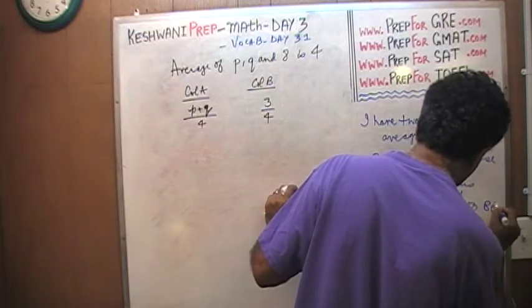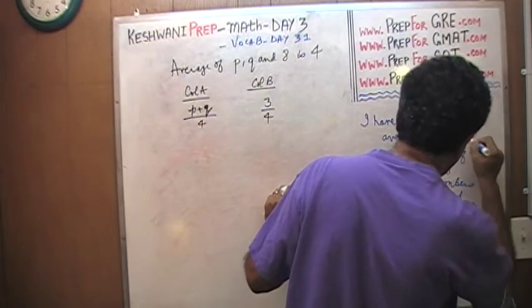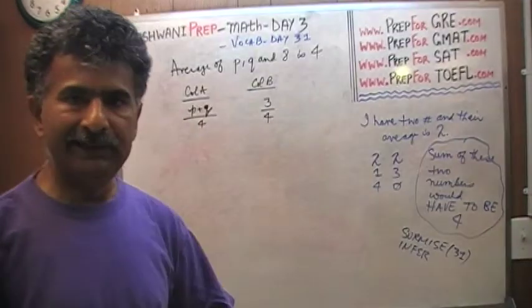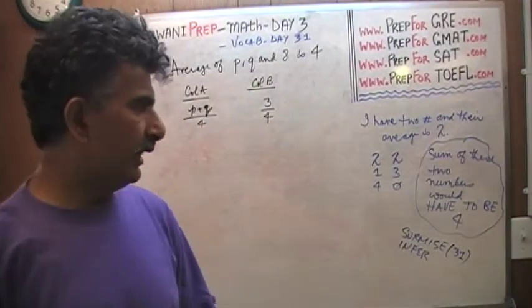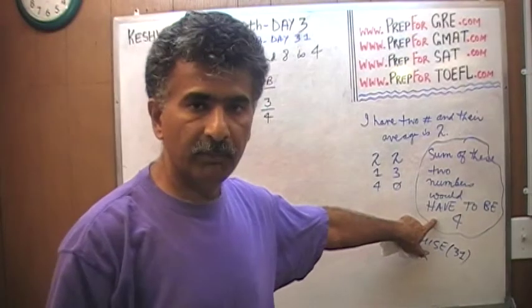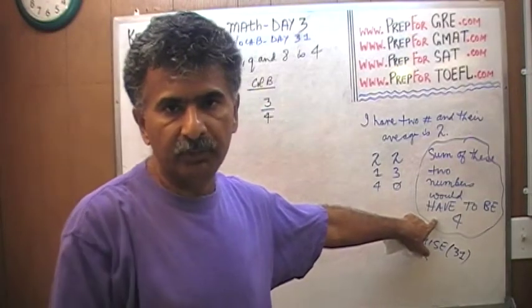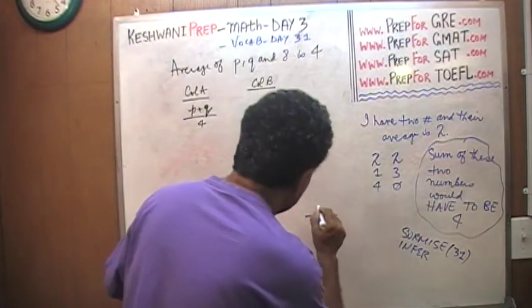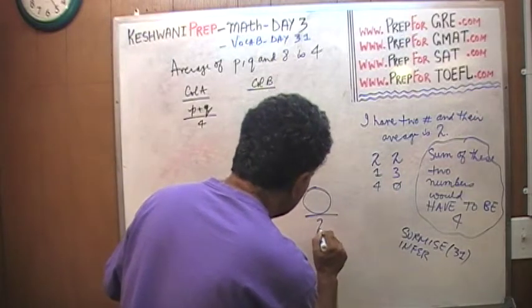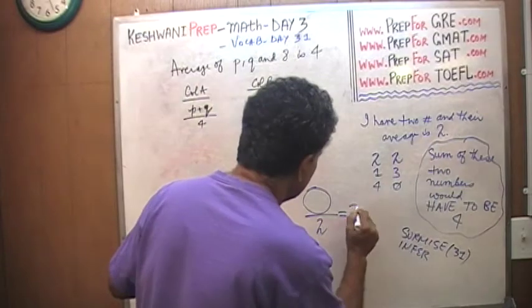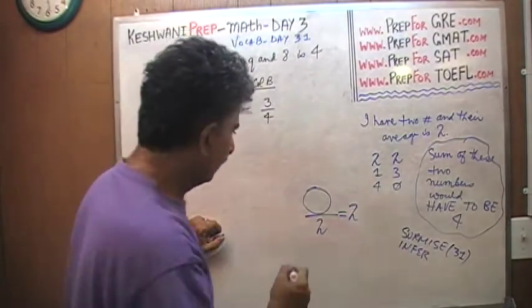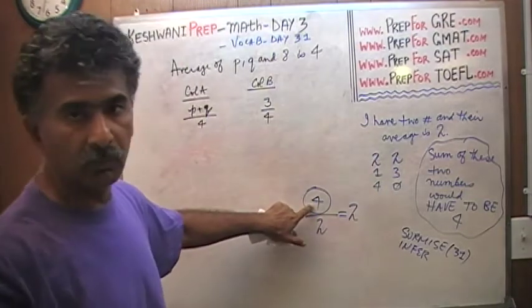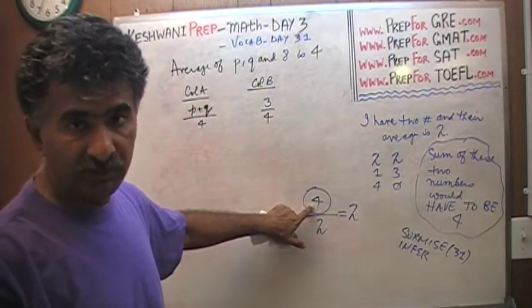would have to be four. That is the only thing that we can say for a fact. Why? Because how do you find the average? You add up the two numbers and divide by how many you have. We have two numbers here. So what number divided by two is going to give me two? Of course, four. The sum of these two numbers that we are talking about would have to be four. What those two numbers are, we do not know.